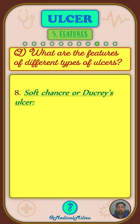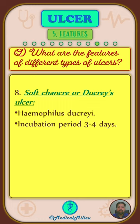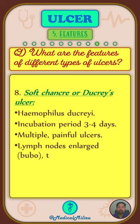Soft chancre, or Ducrey's ulcer, is caused by Haemophilus ducreyi. The incubation period is 3-4 days. The ulcers are multiple and painful, while the lymph nodes are enlarged, tender, and they frequently suppurate.